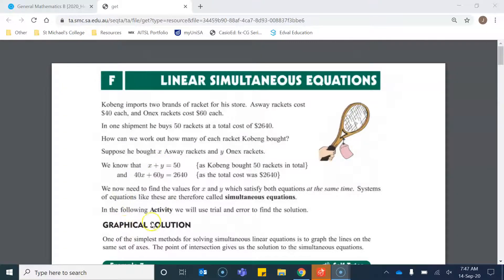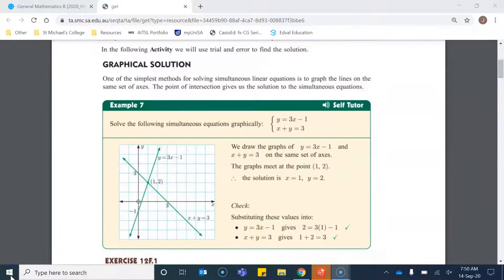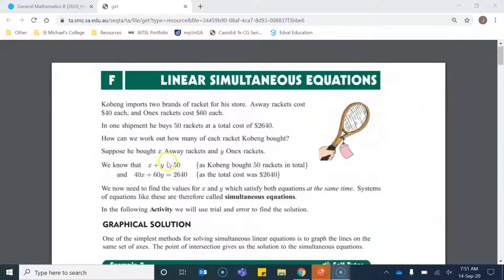The first way that we're going to look at is using a graphical solution to solve the problem. When we want to solve a set of simultaneous equations graphically, basically what we have to do is graph the lines on the same set of axes and wherever the two lines intersect each other, that gives us the solution to our problem. If we were to graph these two equations on the same axes, wherever those two points intersect, that will tell us the number of each of the different types of rackets.